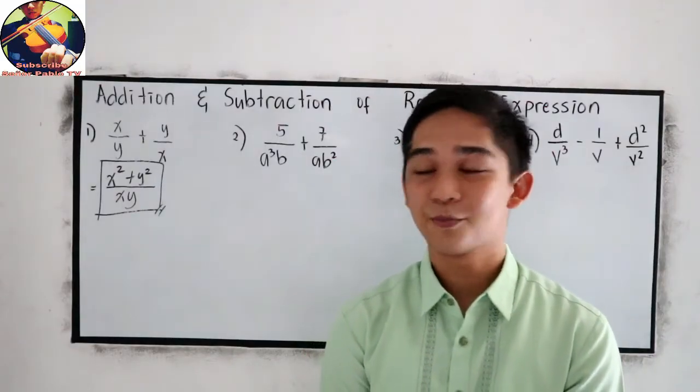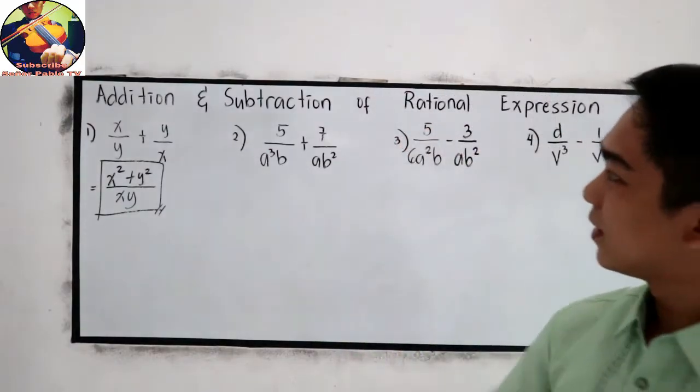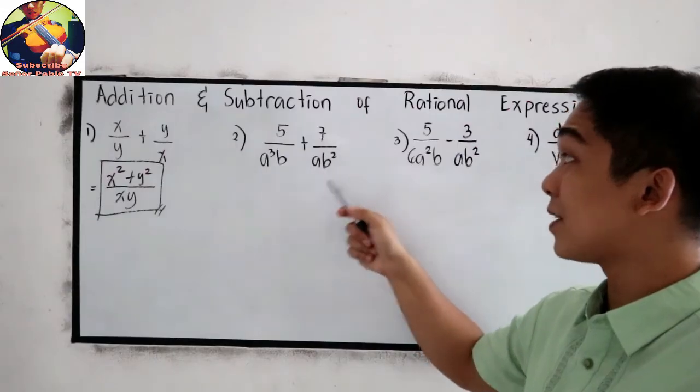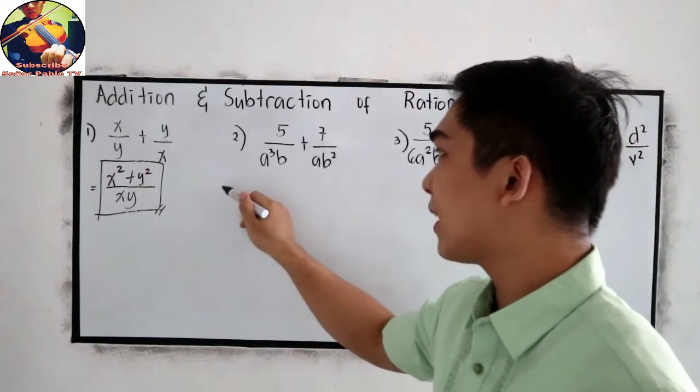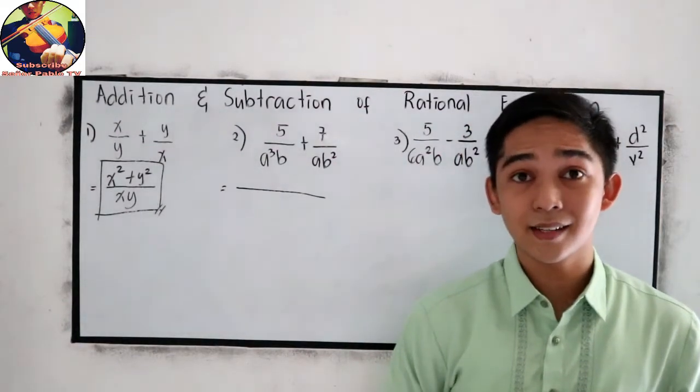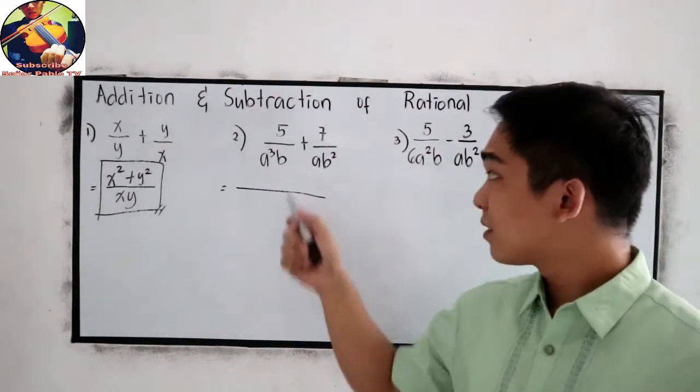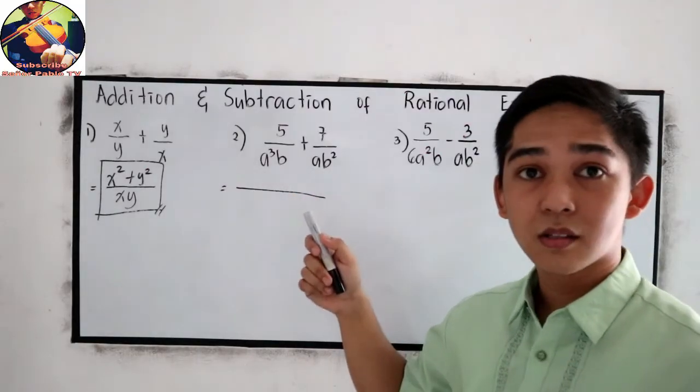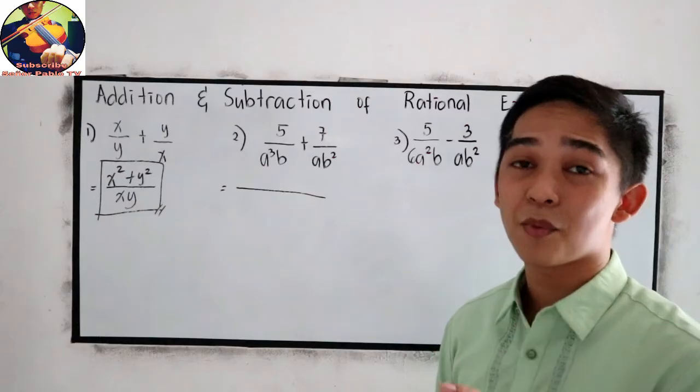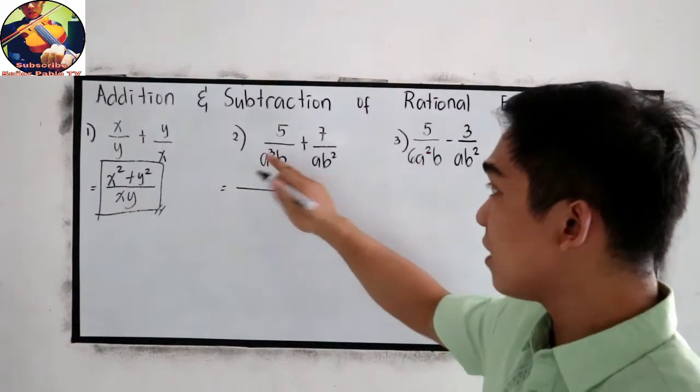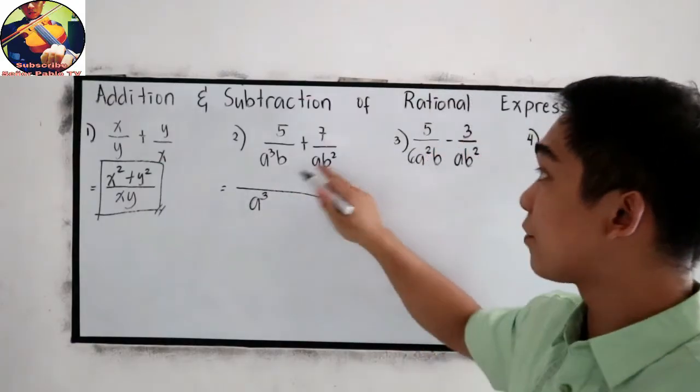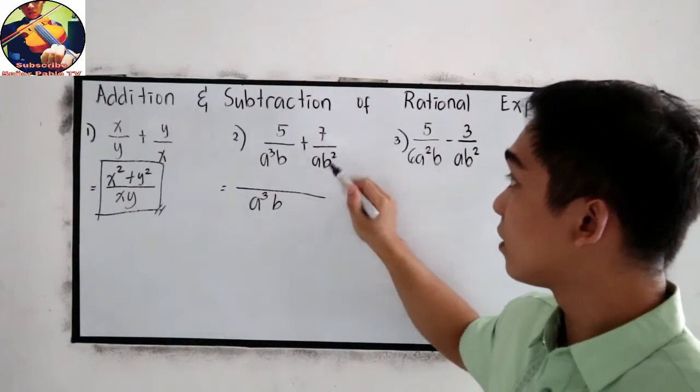Now, let's try number 2, 5 over a cubed b plus 7 over a b squared. Let's find the LCD. LCD is, since these are variables, just copy the exponent or just copy the variable with the highest exponent. For a, our highest exponent is 3. And for b, we have a square.